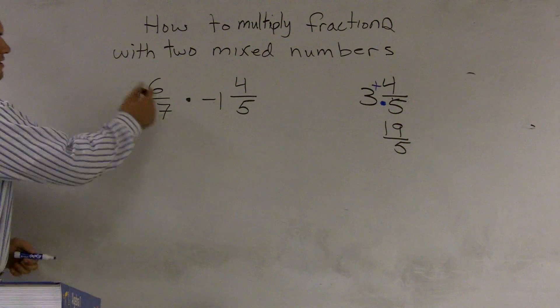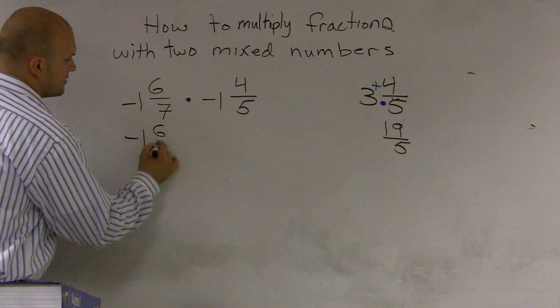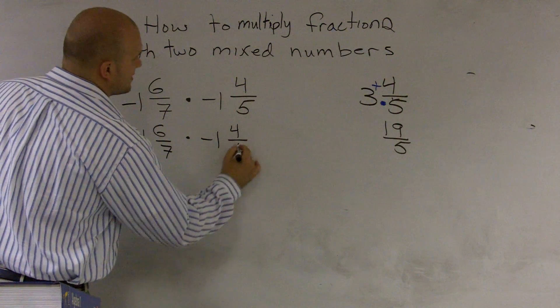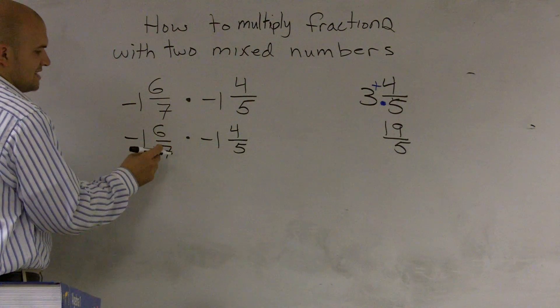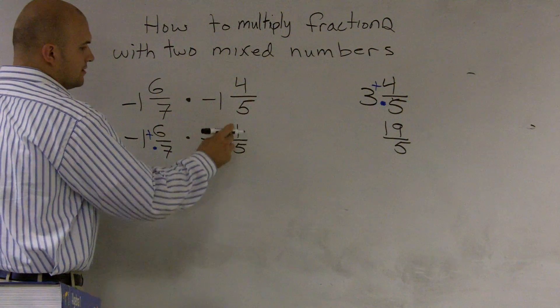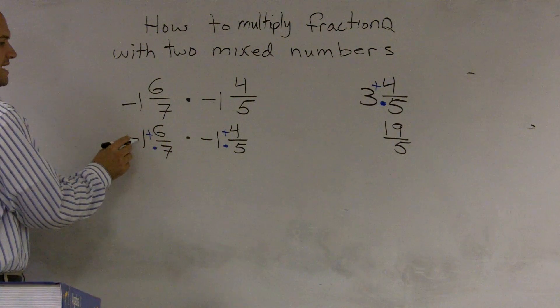So going back to here, I need to change these over. And I'm just going to rewrite this so you guys can see it with the operations in there. So it would be seven times one plus six, five times negative one plus four. So that comes to negative seven.